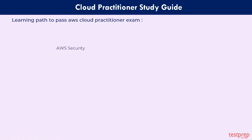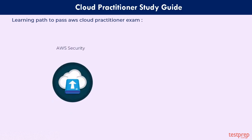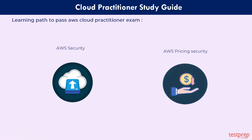Fifth, AWS Security. AWS Security provides services that help you protect your data, accounts, and workloads from unauthorized access. Sixth, AWS Pricing. AWS offers a pay-as-you-go approach for pricing across over 160 cloud services. With AWS, you pay only for the individual services you need, for as long as you use them, without requiring long-term contracts or complex licensing.